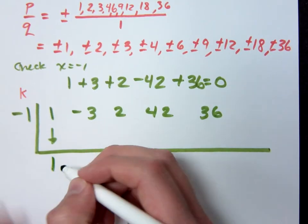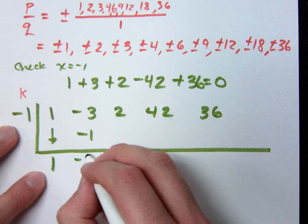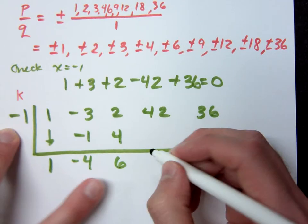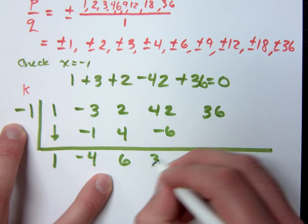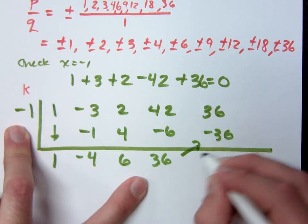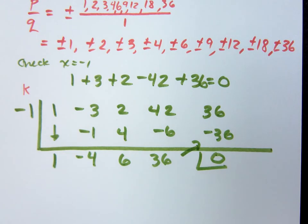So this is a 1 multiplying. Negative 1, add. Multiply, add. Multiply, add. Multiply. I get a remainder of 0. Do you all agree? Okay.